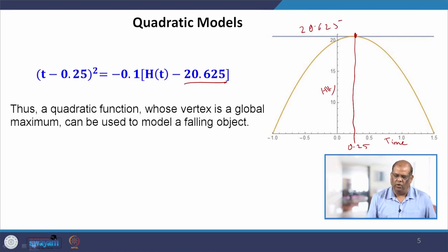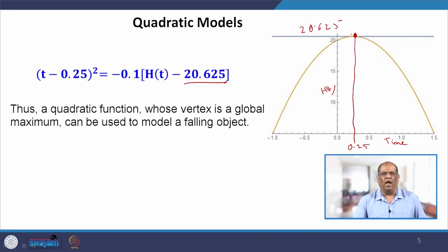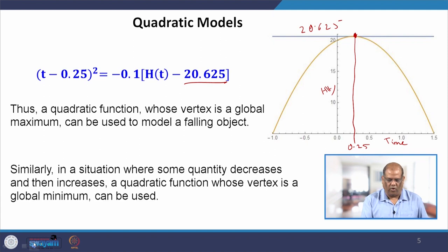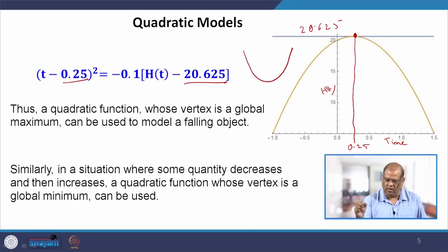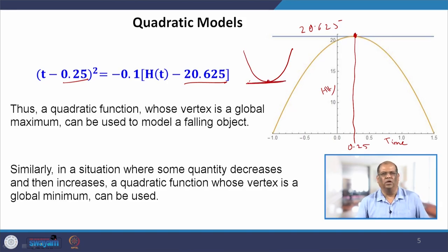In this case, the vertex of the quadratic function is a global maximum. Every time you will reach a maximum at the vertex, and this can be used to model a falling object. Similarly, if some quantity decreases and then increases, you can reach a global minimum at that particular point. This quadratic function is used wherever you want a global maximum or a global minimum.